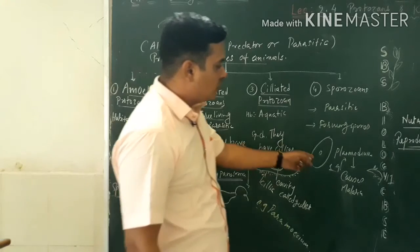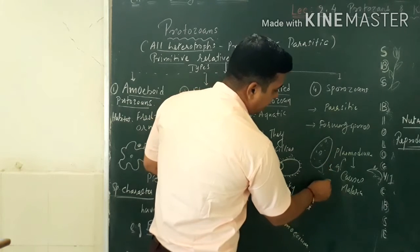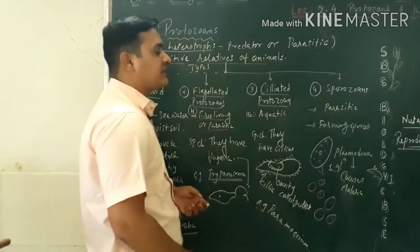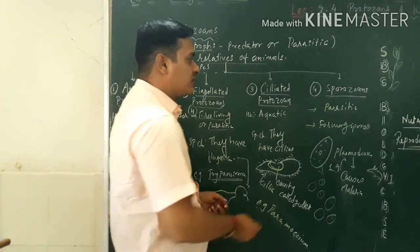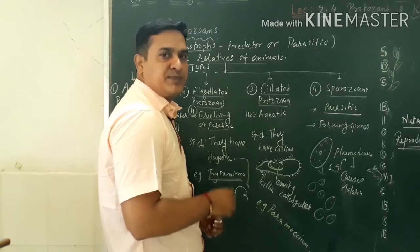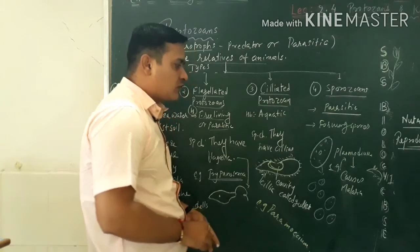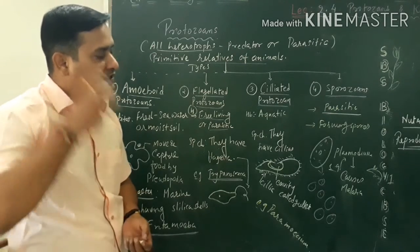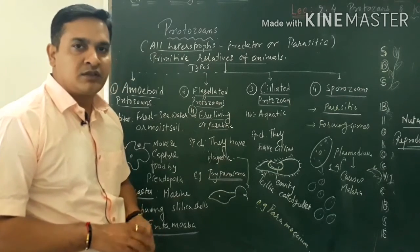Now we talk about the sporozoans. They are first followed by nuclear division, and at the end they are forming very small tiny spores. That's why they are placed into the sporozoans. This type of protozoans are called sporozoans, mostly parasitic. At the next stage of life cycle they produce spores. Well known example is Plasmodium that causes different types of malaria. The malaria is caused by Plasmodium, that means nothing but a protozoan.